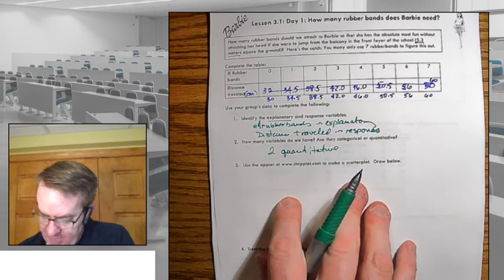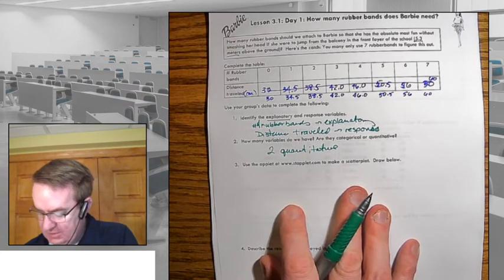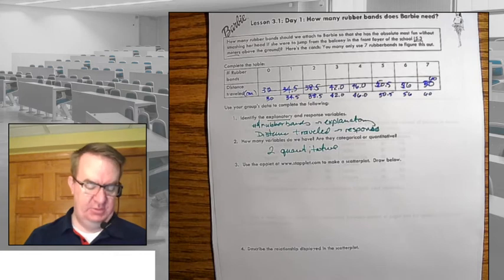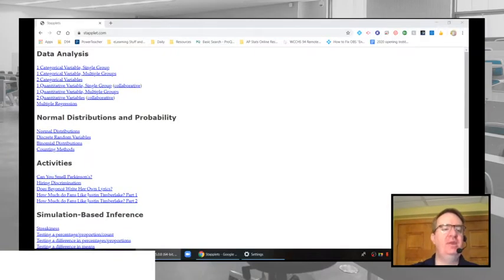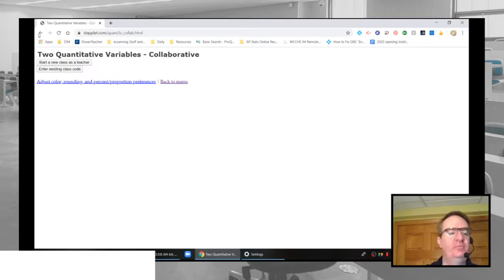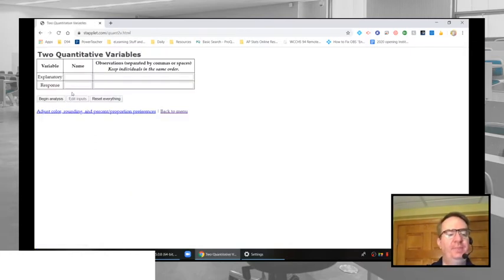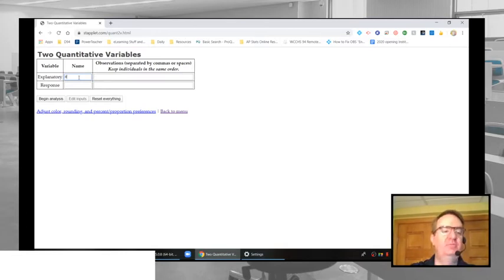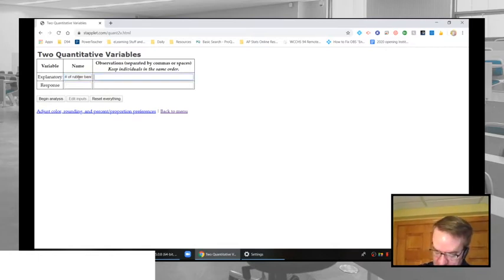So we're going to use the applet at staplet.com to go ahead and make this into a scatter plot. So let's jump over there. And so we need two quantitative variables. Sorry, we don't want the collaborative one. So explanatory is going to be number of rubber bands. Observations by space. So we've got zero and one and two and three and four.